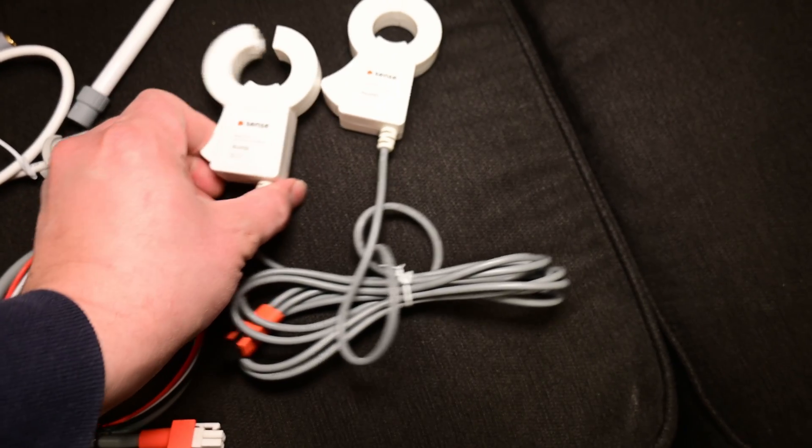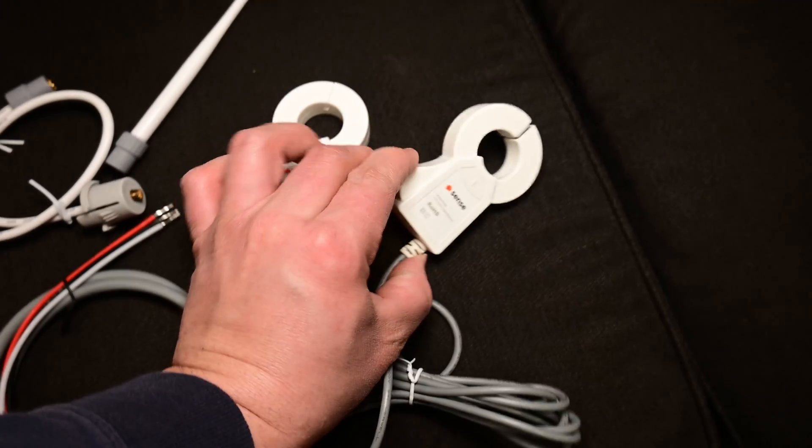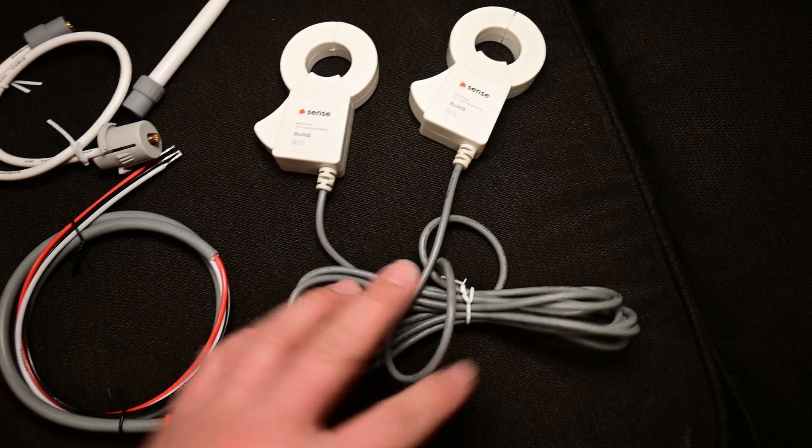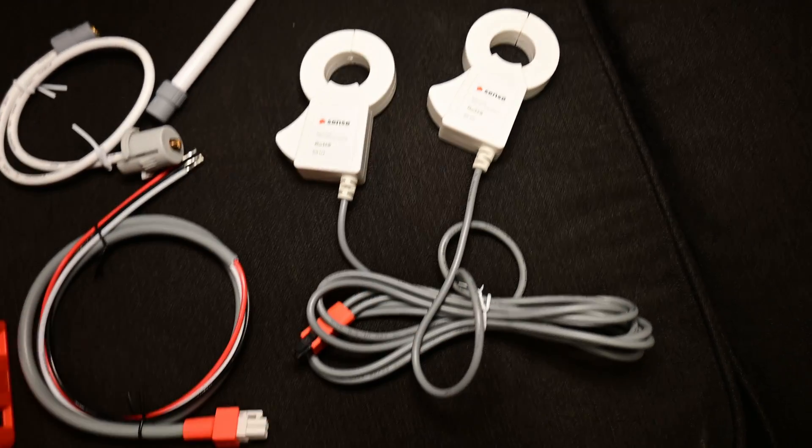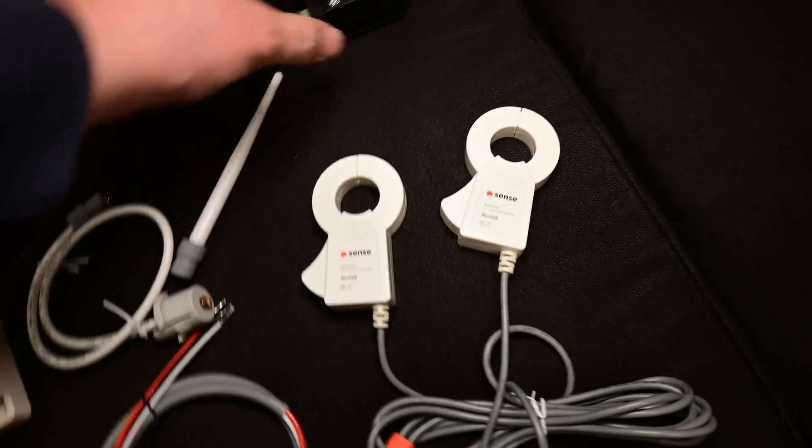These are your two amp meters, which are going to clamp around your two main wires coming into the top of your panel. And that will tell you how much power you're drawing at any given time.